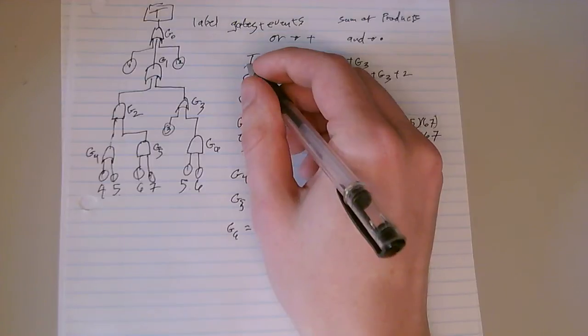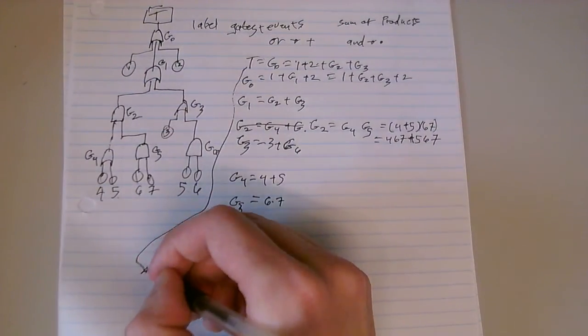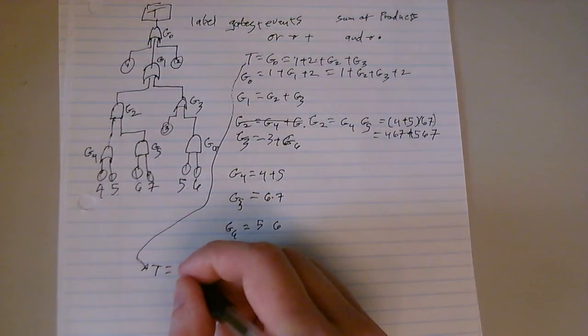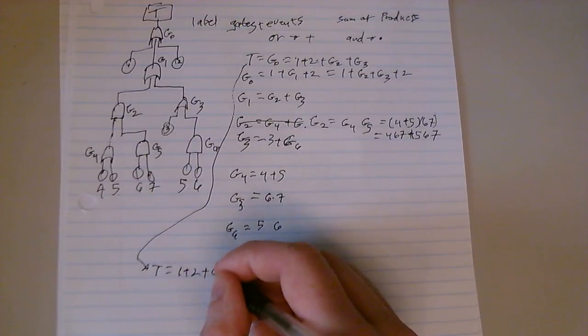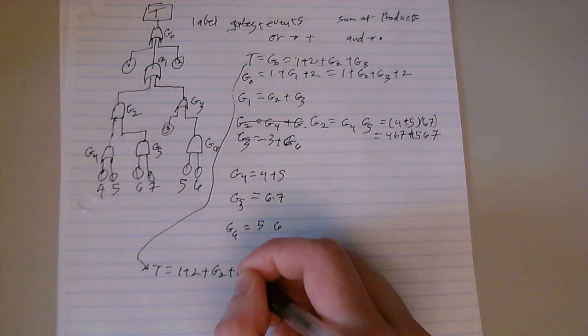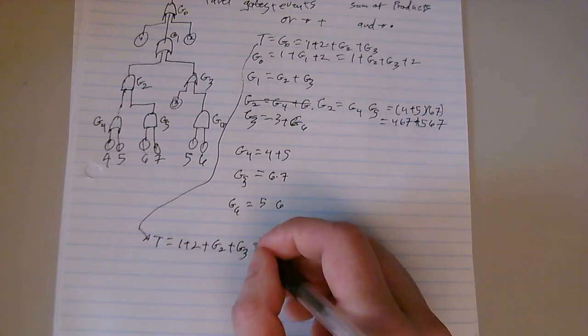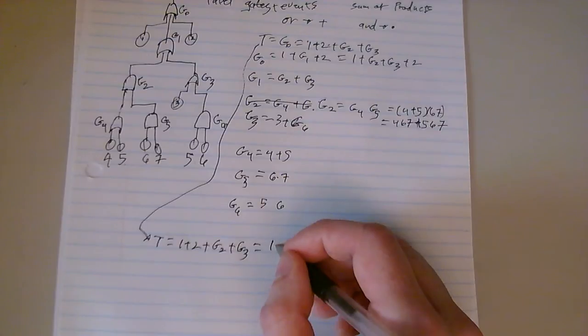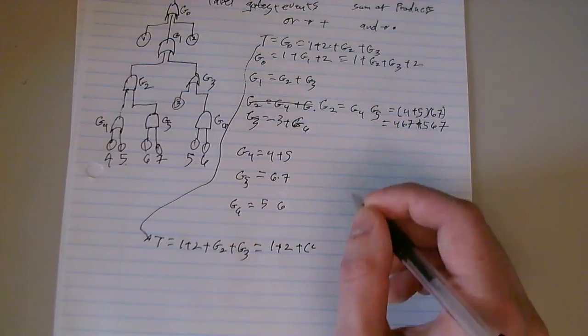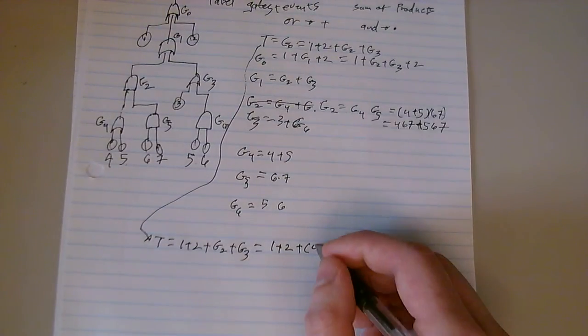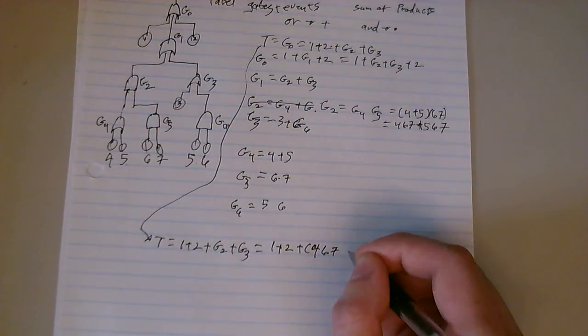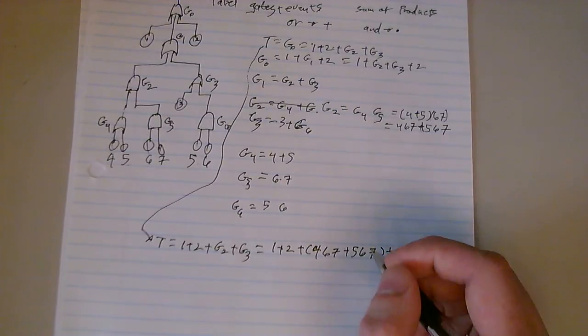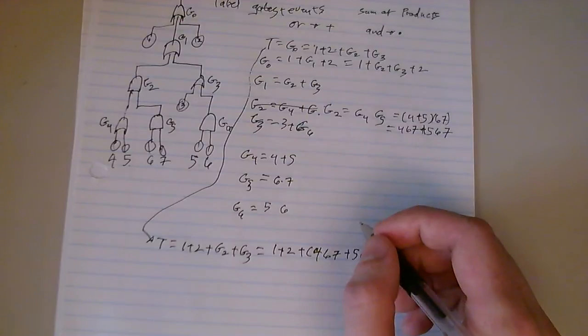So let's go ahead and write this stuff down here. We're going to say T equals 1 plus 2 plus G2 plus G3. Which equals 1 plus 2 plus, we said G2 equals 4, 6, 7 plus 5, 6, 7.